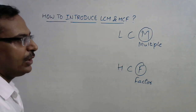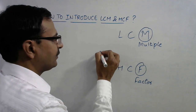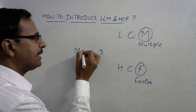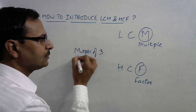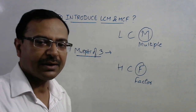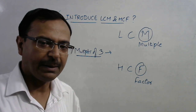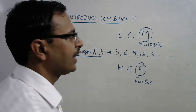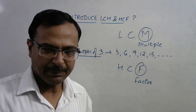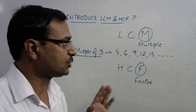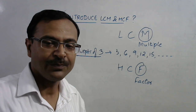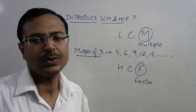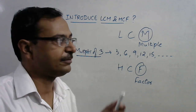To introduce the concept of multiples, take a number like 3 and write its multiples. Multiples of 3 are the numbers which occur in the table of 3: 3, 6, 9, 12, 15, and so on. Students already know their tables, so ask them what the multiples of a particular number are. If you practice this for five or six numbers, they will know what multiples are.